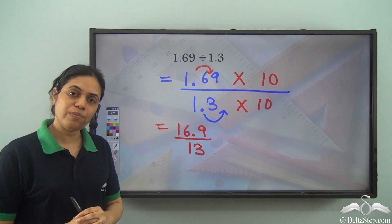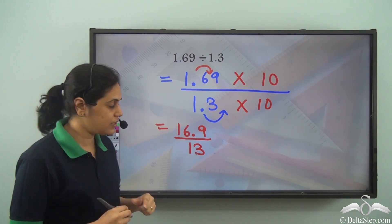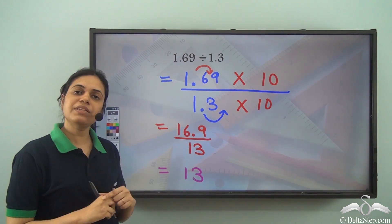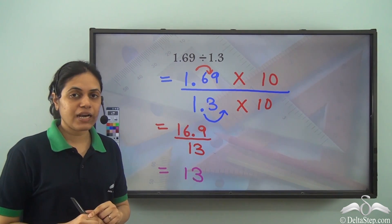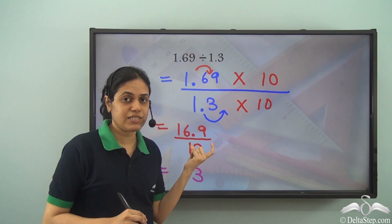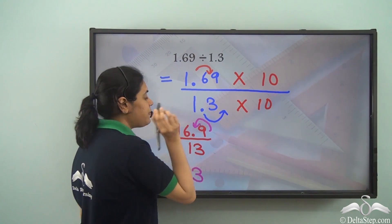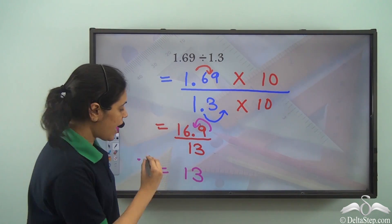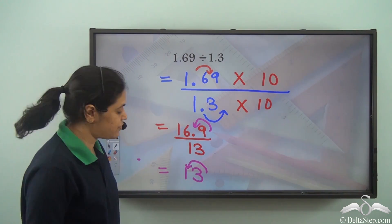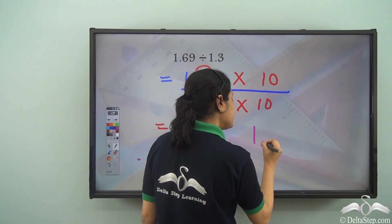So we can now divide normally. I ignore the decimal point and divide 169 by 13, which gives 13. Now I need to put the decimal point at the correct place. When there is a decimal point in the dividend, I look at where the decimal point is — it is one place from the right — so starting from the right I move one place to the left and put the decimal point there. So the quotient is 1.3.